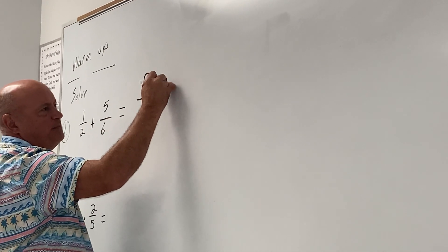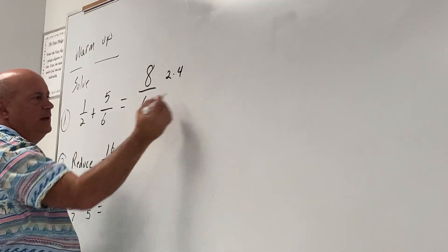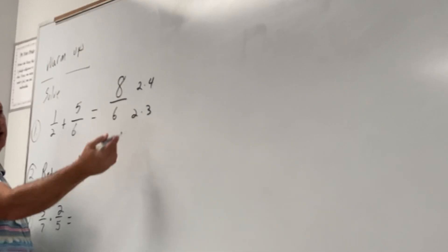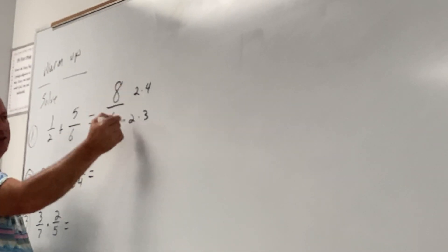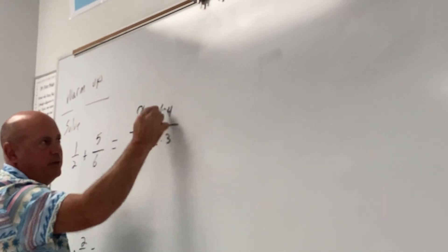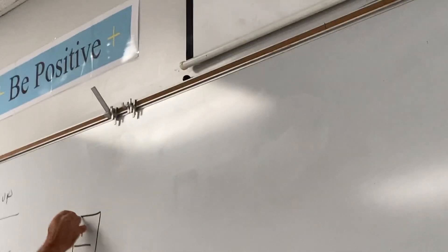Isn't eight two times four? Isn't six two times three? And here's how you reduce. If you get a two on the top, two on the bottom, they cancel out. What is my final answer? Four over three is the correct answer for that problem.